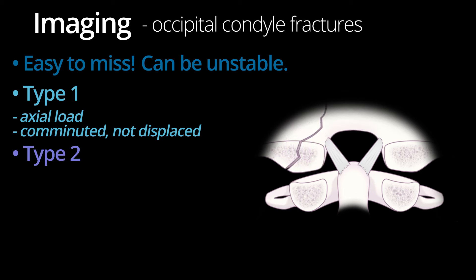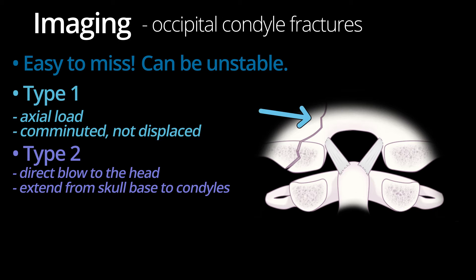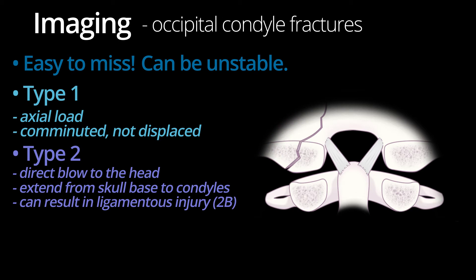Type 2 occipital condyle fractures are typically more extensive fractures that are the result of a direct blow to the head. These fractures are linear fractures of the skull base that extend to involve the occipital condyles. These fractures can potentially be associated with ligamentous injury, in which case they are considered to be unstable.